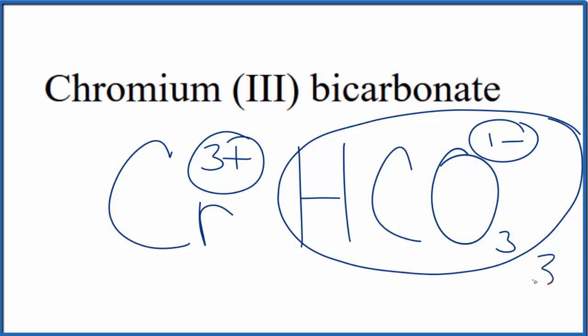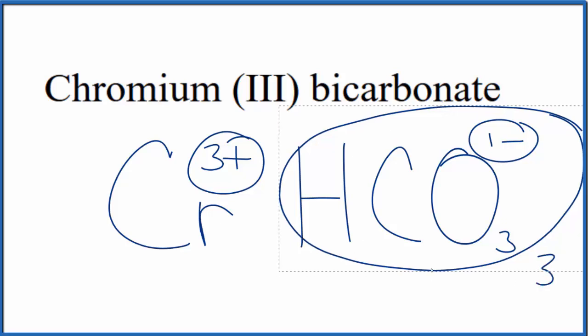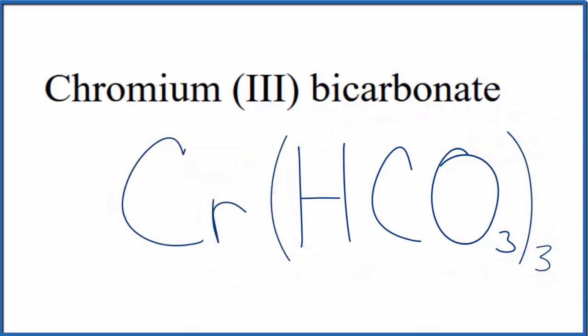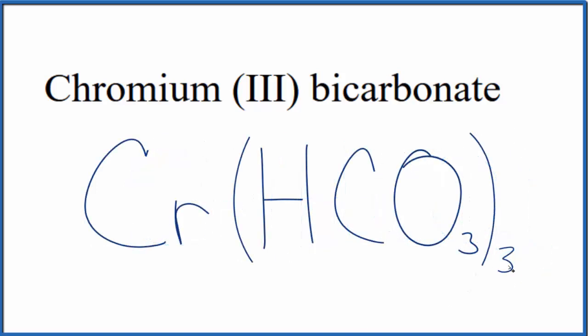So let's put a 3 out here and replace this here with parentheses. And this is the formula for chromium-3 bicarbonate, also called chromium-3 hydrogen carbonate. You'll note that we have three of these bicarbonate ions in chromium-3 bicarbonate.